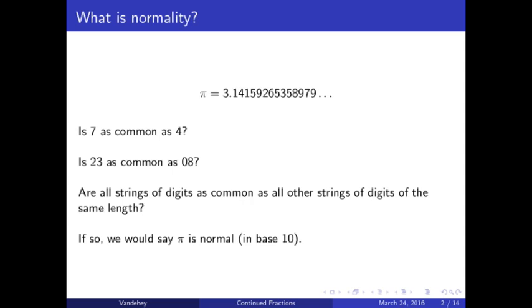Now, as we look at the digits of pi, one could ask a very basic question. Do we see the number 7 as often as we see the number 4? And do we see the string of digits 2, 3, as often as we see the string of digits 0, 8? If every string of digits is as common as every other string of digits of the same length, then we say that pi is normal in base 10.